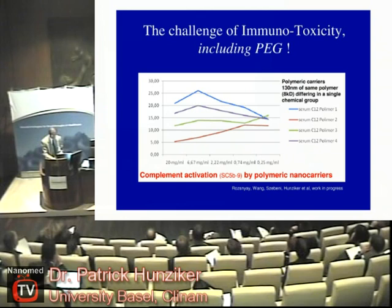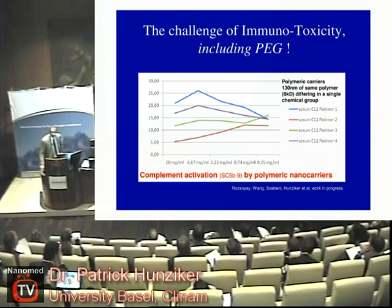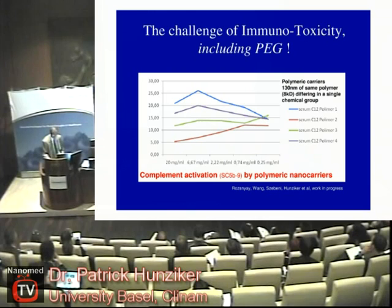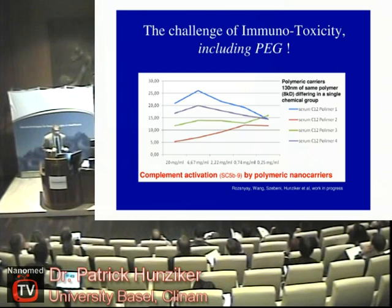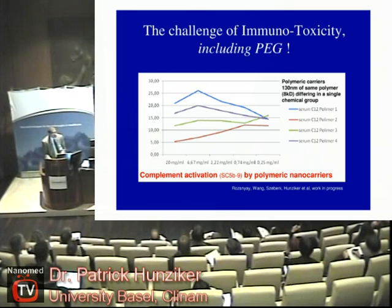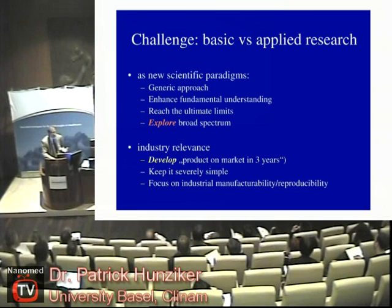The challenge of immunotoxicity is a major one, and we have somewhat forgotten about it. Even PEG — the oldest and most important polymer — shows important immunotoxicity in some patients. We used a polymeric drug carrier together with a research group and looked at the activation of the complement system. With an 8 kilodalton polymer, changing just a single chemical group produces huge differences across the four different species tested. How can we predict, avoid, and eliminate such immunotoxicity? This is a key question for the application of nanomedicines, particularly to diseases other than cancer.